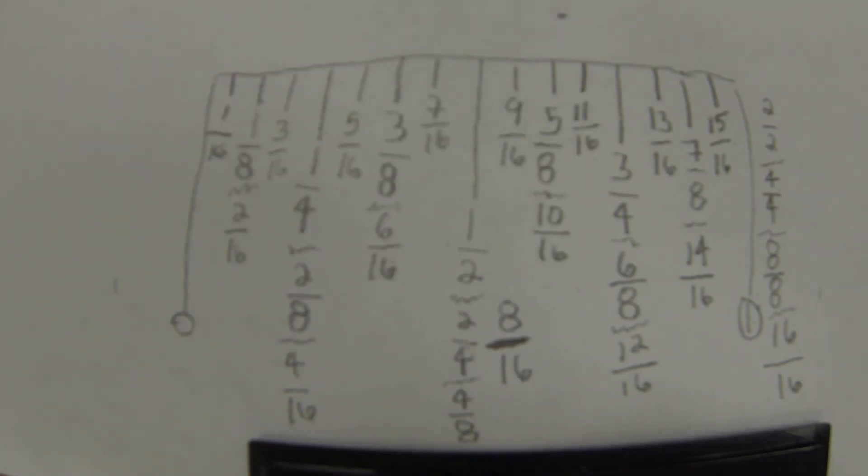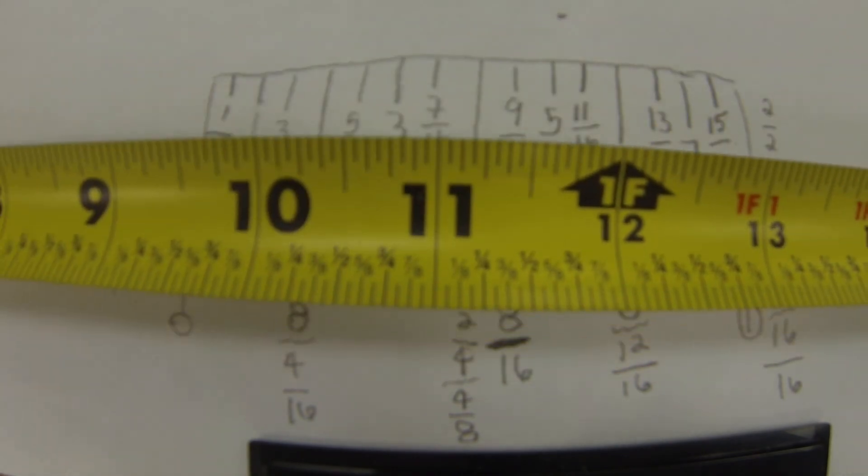Alright students, that's how you read a ruler. Please take a look at this again and again. It works to count up the sixteenths and then simplify your answer. If it's more than a whole number, please take the whole numbers down as you pass them, and then count from the whole number to your measurement to establish your final answer. Alright, good luck and happy measuring.